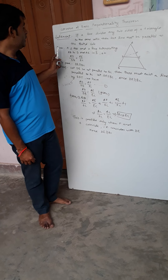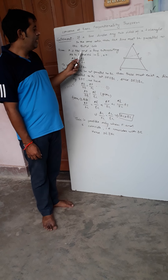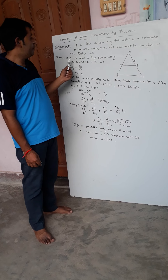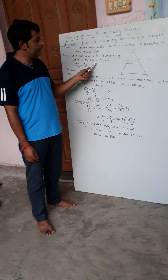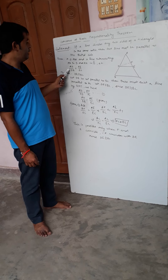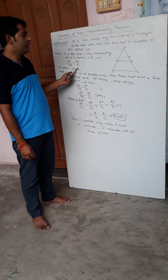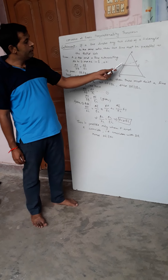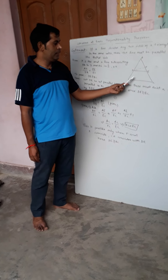So, what is given here? A triangle ABC and a line intersecting AB at D and AC at E, such that AD upon DB equals AE upon EC — that is given. Now, we have to prove DE is parallel to BC.